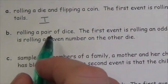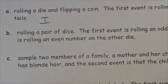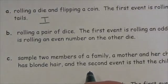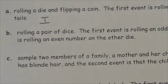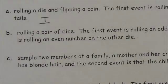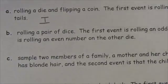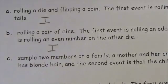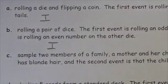Rolling a pair of dice: the first event is rolling an odd number on one die and the second event is rolling an even number on the other die. Getting an odd number on the first die is one out of two, and rolling an even number on the second die is also one out of two. It doesn't matter what happens — they are independent of each other. One event does not affect the other.